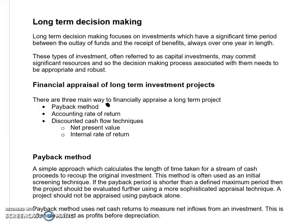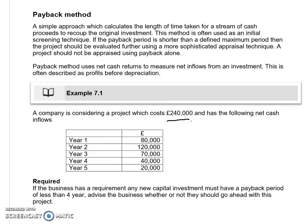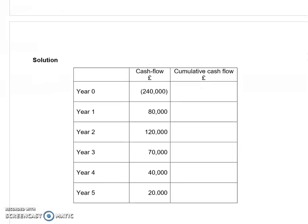The easiest way for us to consider this is by looking at an example. Here we've got a capital outflow of £240,000 with some money coming in over a five-year period. The business has a requirement that any new capital investment must have a payback period of less than four years. We really need that criteria if we're going to look at the project properly. Here we have a little table with the cash flows from the example. We have the outflow, which is going to be in year zero, and then money coming in — that would be net revenue, could be net contribution — some inflow of cash over the five-year period.